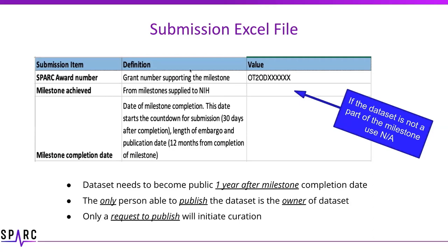The submission file has just one tiny change. We've heard from multiple investigators that if a dataset is not actually part of a particular milestone, you can now use 'any' here without throwing errors. A quick reminder: every dataset needs to become public one year after the milestone completion date. Only the owner of the dataset is able to publish it — so make sure the PI becomes the owner. Only a request to publish a dataset will actually initiate curation, because we cannot know when you're done uploading until you push that publish button.